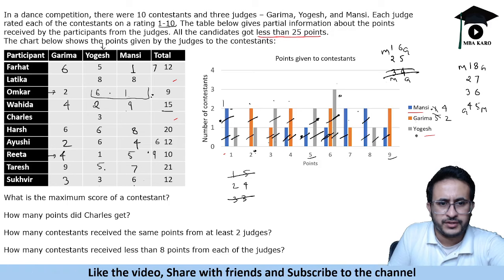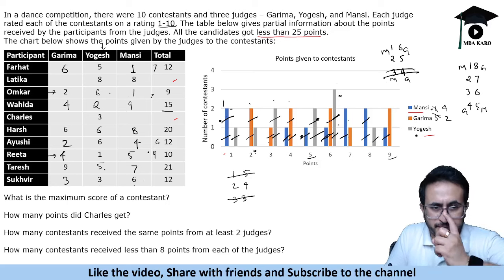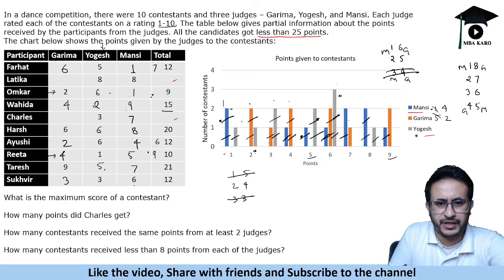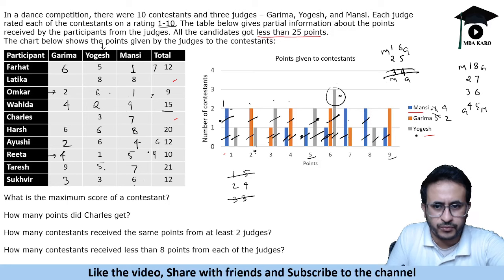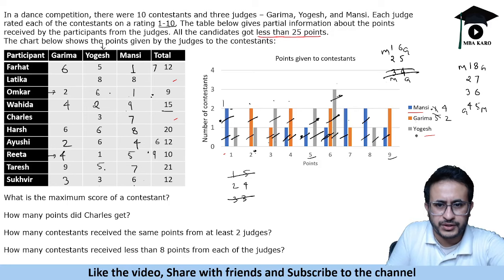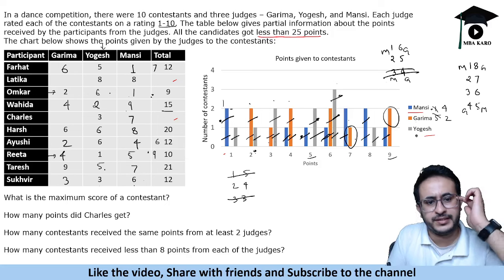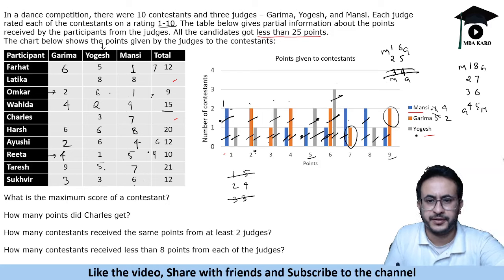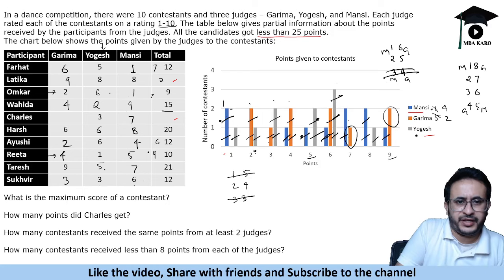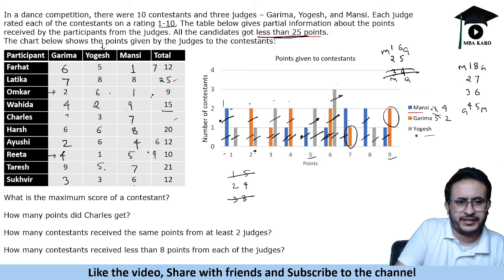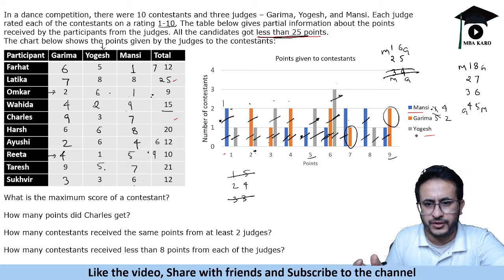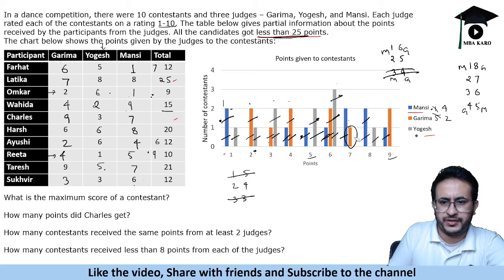Now only one value remains for each. For Mansi, the 7 points are pending — so this is 7. For Garima, 2 values remain: one is 9 points and another is 7 points. We need to distribute 9 and 7. If we put 9 here, that becomes 25 — but we are given that each candidate got less than 25. So we cannot put 9 here. We will put 7 here and 9 there. This is how we assign all the points. We can now add these totals — all values are assigned.